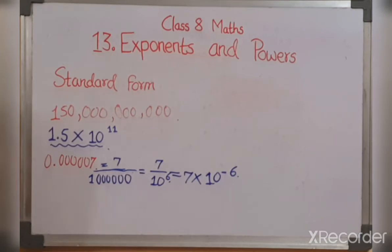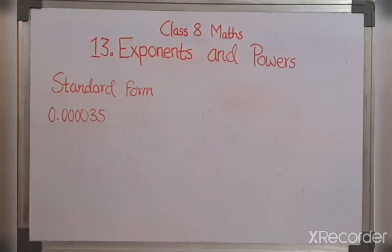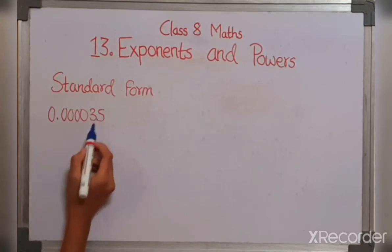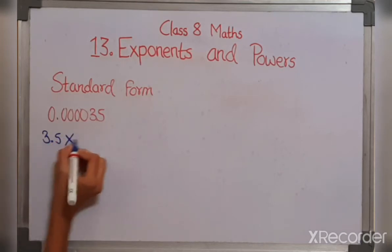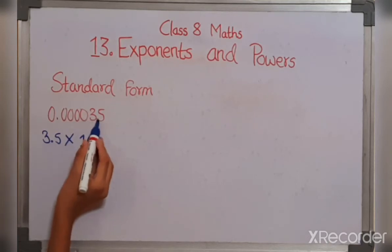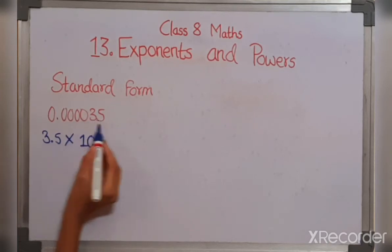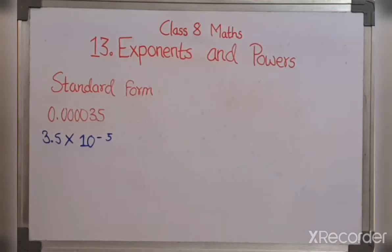Now let's solve some of the questions related to this standard form. Now we will express this number in standard form. So we are going to take the decimal point between 3 and 5. Then the number is going to be 3.5 multiplied by 10 raised to the power 5. We are shifting 5 places to the right side. So it is going to be minus 5. So the answer is 3.5 multiplied by 10 raised to the power minus 5.